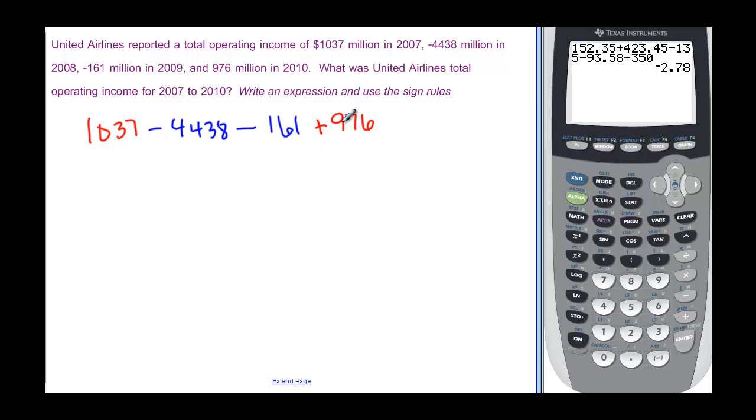If we have 976 and 1037, that's 1,000. This is almost another 1,000. So it's about 2,000, a little more than 2,000. But we already have to subtract 4,000. So this one should be a negative answer. Let's see if it really is.